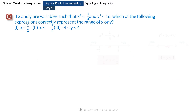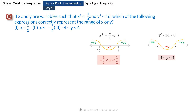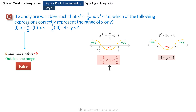Now that we have established the range of possible values of both x and y, let's look at the three given statements. Statement 1 says x is less than 1/2. This is misleading — it implies x could be minus 4, which is outside the allowed range of minus 1/2 less than x less than 1/2. So statement 1 is false. Statement 2 is false. Statement 3 is true.